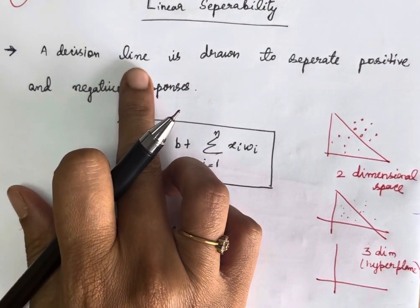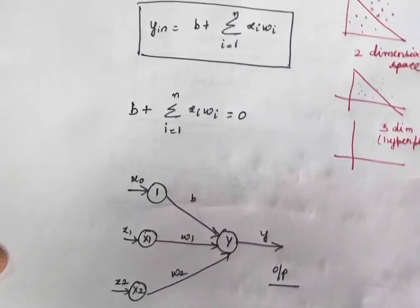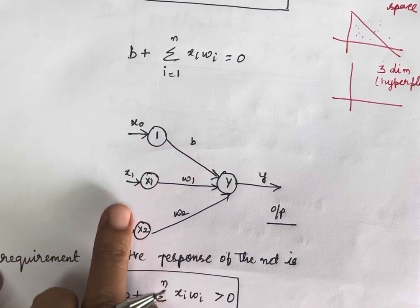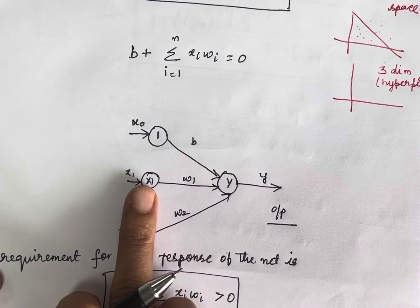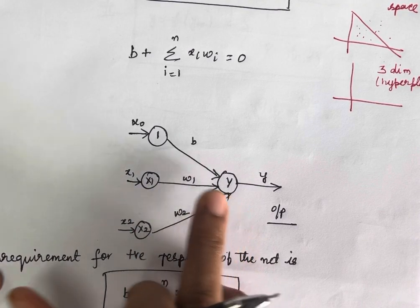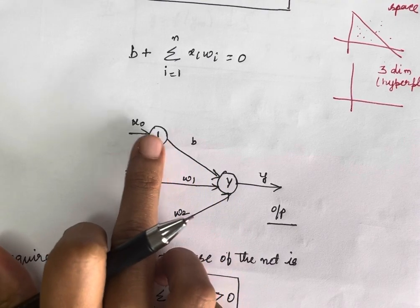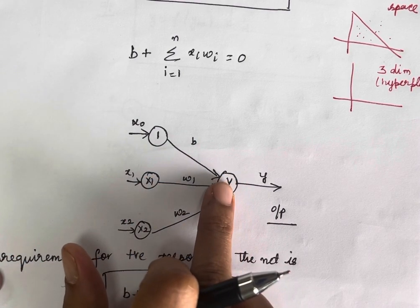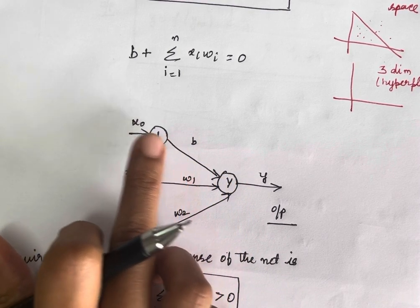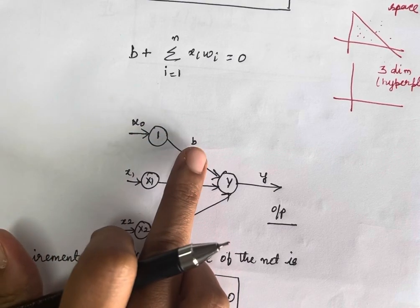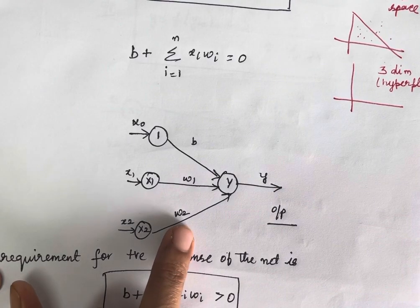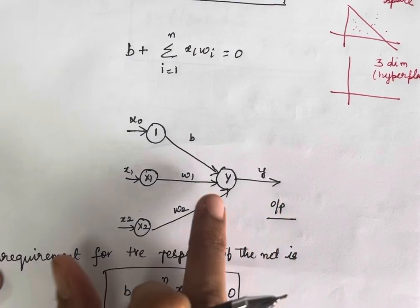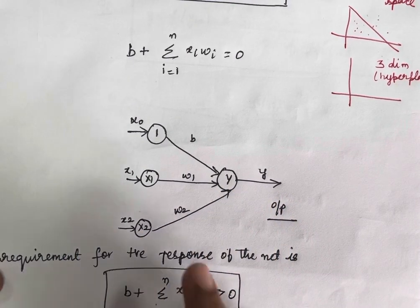How you are going to derive this decision line is based on the neural network itself. Consider a simple artificial neural network where we have two inputs x1 and x2 given to the output y, and you have one bias with net input equal to 1. So how will you calculate this net input? That will be b plus x1 into w1 plus x2 into w2, giving you y input. Then you apply the activation function on this net input to get y.